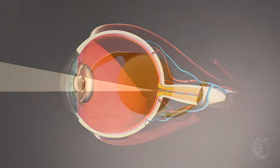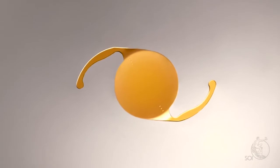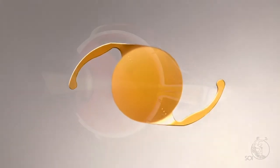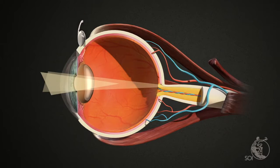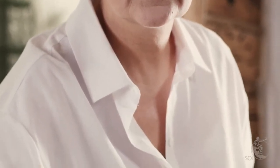Today, monofocal and monofocal toric intraocular lenses correct astigmatism, nearsightedness, and farsightedness but do not have the ability to provide good near vision such as for reading newspapers or using the computer.